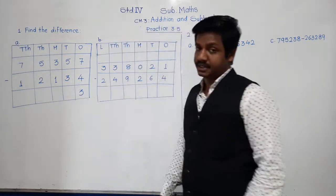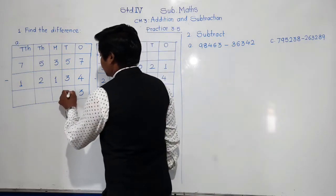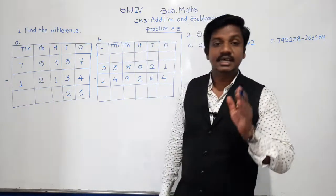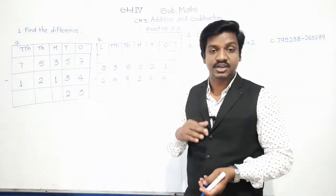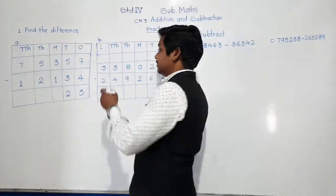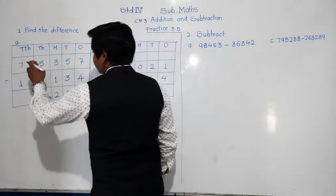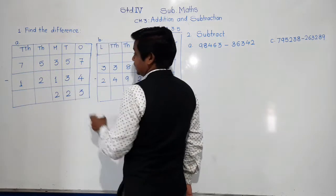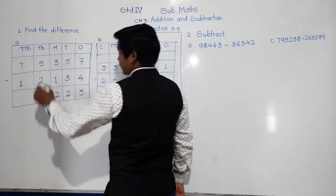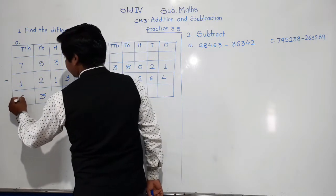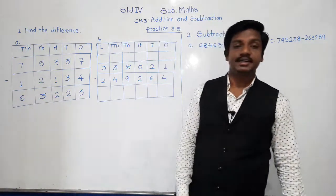Five minus three is two — you must learn to calculate in your mind. Five minus three is two. Three minus one is two again. Five minus two will be three. And seven minus one is six. So the answer is 63,223. This is the difference of these two numbers.